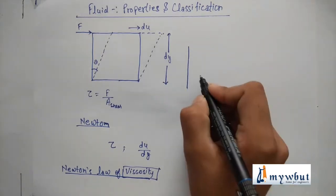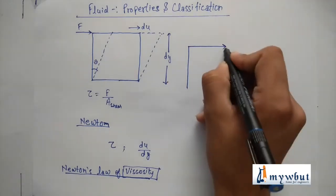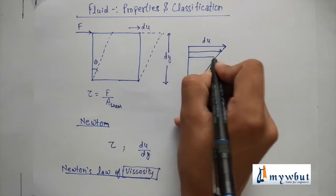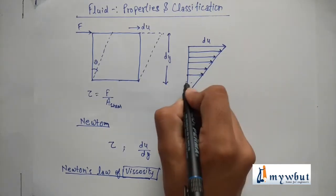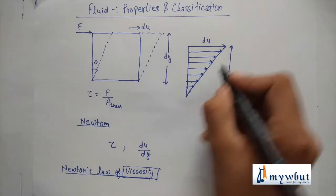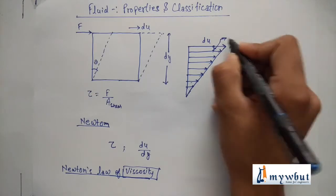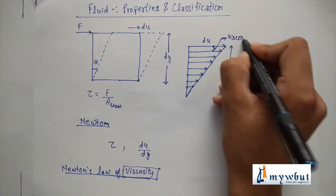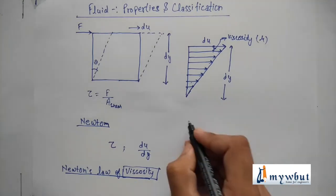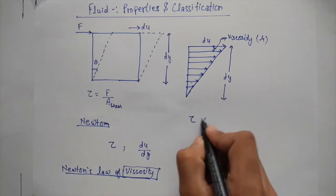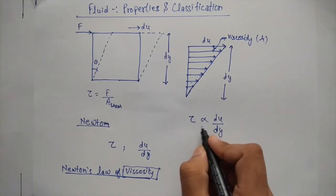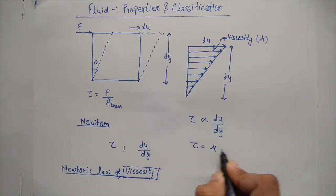Suppose this is a fluid flowing with velocity du. It has several layers, and if the distance between two layers is dy, then the resistance offered between these two consecutive layers is termed viscosity, represented by mu. Newton stated that the shear force acting during fluid flow is directly proportional to the velocity gradient du/dy. To remove the proportionality sign, we apply a constant — that constant is nothing but viscosity.